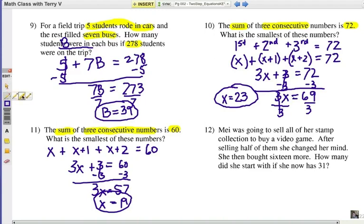Finally, to finish off our set of problems here. Mei was going to sell all of her stamp collection to buy a video game. After selling half of them, she changed her mind, then she bought 16 more. How many did she start with if she now has 31? If you focus on the last question there, how many did she start with if she now has 31?